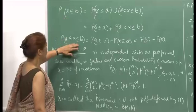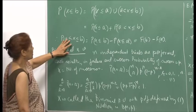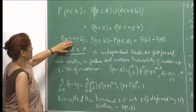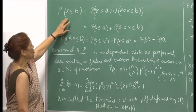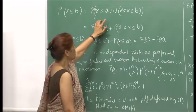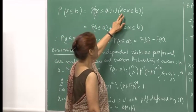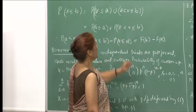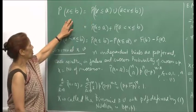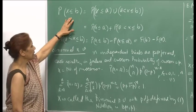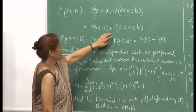The idea is that we want to write x between a and b with strict inequality. We write the event x less than or equal to b as a union of two disjoint events: x less than or equal to a, union x strictly greater than a and less than or equal to b. Because they are disjoint, the probability is the sum of the two probabilities.